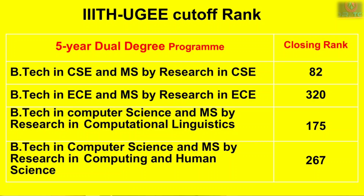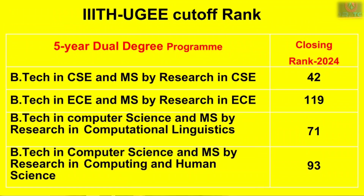Computing and Human Science has a closing rank of 267. We have closing ranks of 82, 42, 119, 370, 119, 71, and 93 across various specializations. There is 50% data available and this is a very competitive institution. Placement is 100% and the college maintains very high academic standards. These are two highly competitive exams.